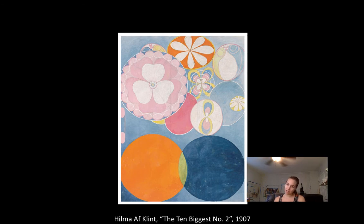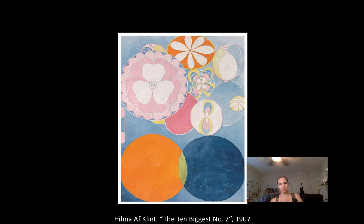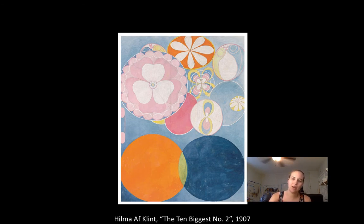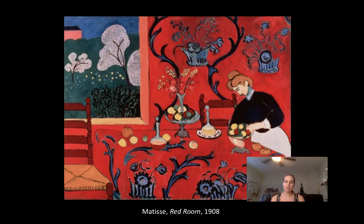Hilma af Klint was an artist at the same time as Kandinsky, and there is evidence that she was making non-representational art before he was, but she's a lot less well known. In this image there are again circles, and in those circles are patterns. Those patterns create variety, but also the different colors create variety, and the different sizes of circles create variety.